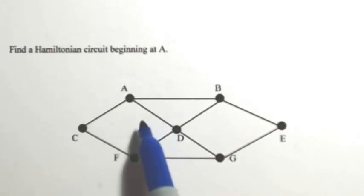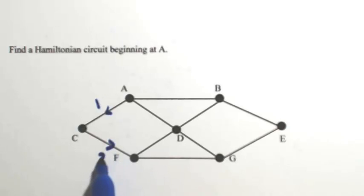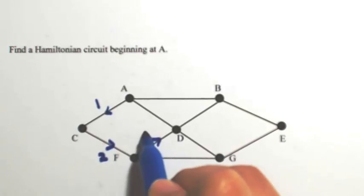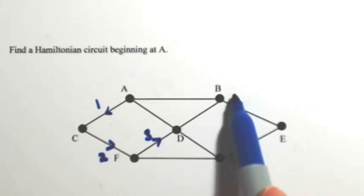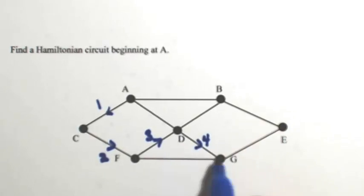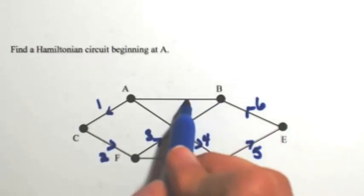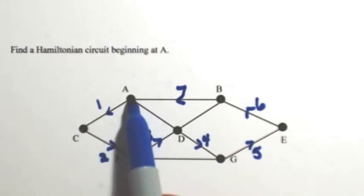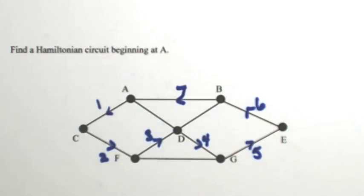I'm going to travel in a similar way. I'll go A to C — that's one — C to F, that's two, F to D, that's three. Then instead of going to B like last time, I would get trapped because I'd have to hit D again. So I'm going to go down to G, then to E, then to B, and then back to A. I've hit all of the vertices only once and I ended back where I started.